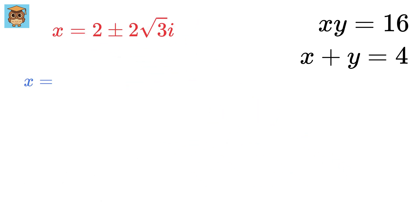So now, we first consider x equals 2 plus 2 root 3i. This gives y equals 4 minus x, or 4 minus this, which is 2 minus 2 root 3i.